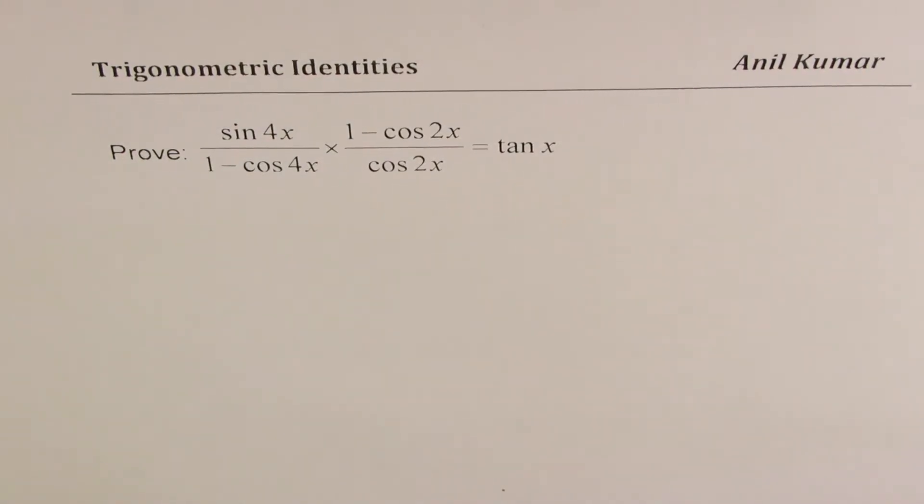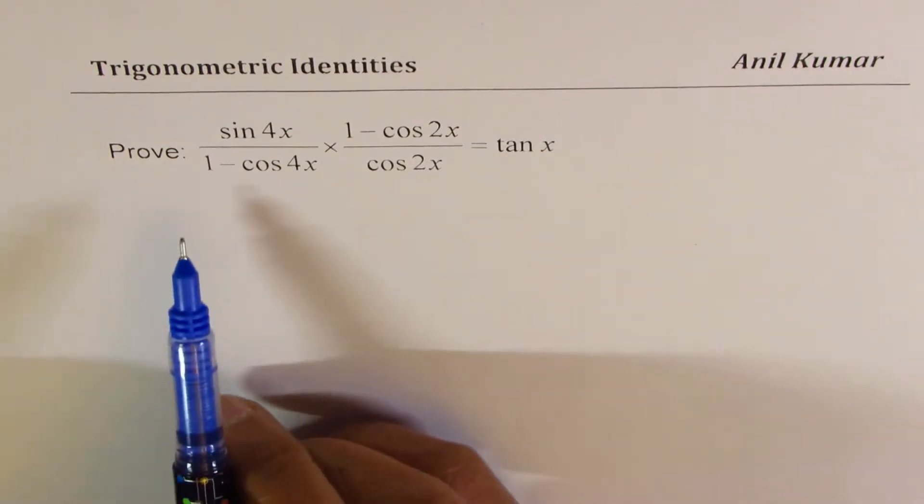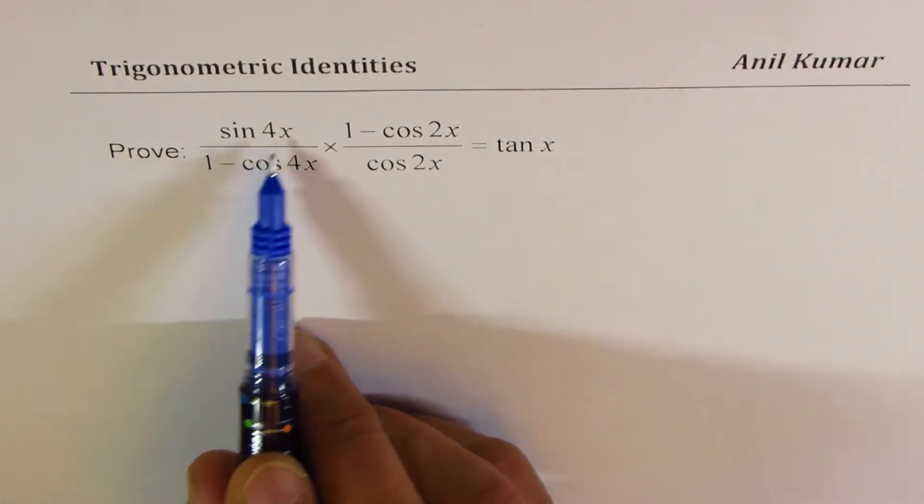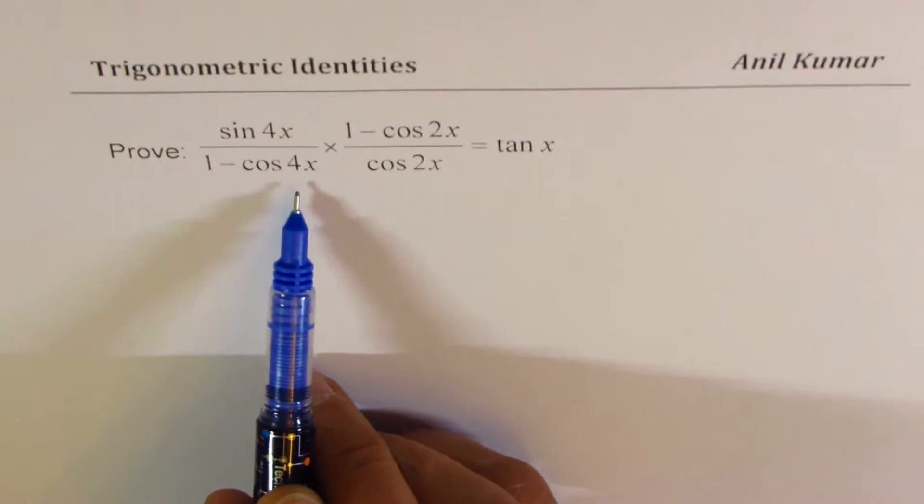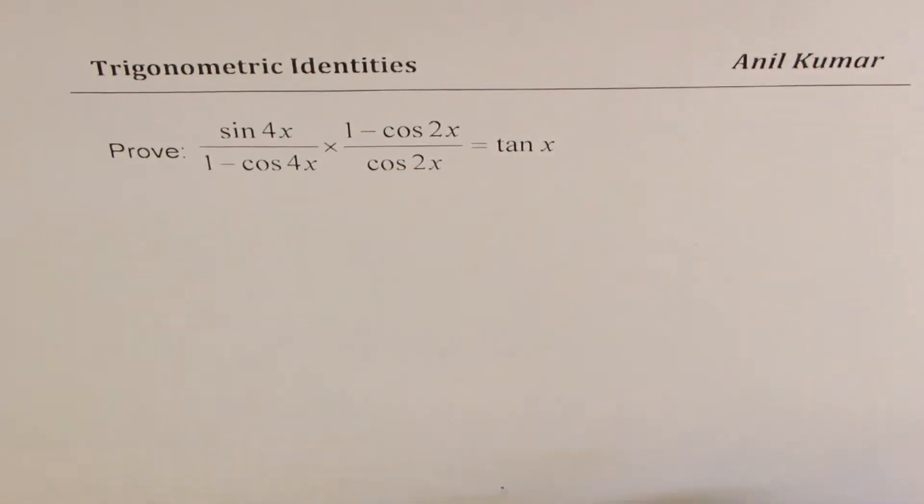I'm Anil Kumar sharing with you a very important question on trigonometric identities, which involves double angle formula. Now let's solve this. The question is, prove sine 4x over 1 minus cos 4x times 1 minus cos 2x over cos 2x equals tan x.